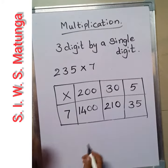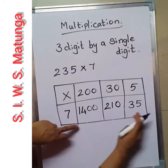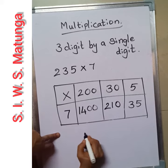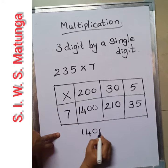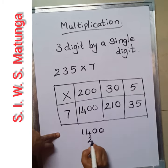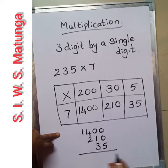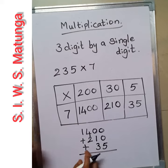Now we have done the multiplication. We only have to add. Write all these numbers together and add. First write 1400, that is the first number. Second number: 210. And the third number: 35. Always write the numbers according to their place value.